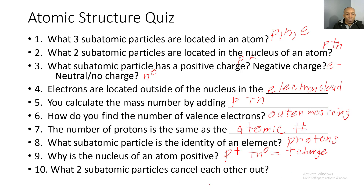Question 10: What two subatomic particles cancel each other out? Answer: protons, which have a positive charge, and electrons, which have a negative charge — positives and negatives cancel each other out. I hope this tutorial was helpful. Please let me know what I can do to assist you, and don't forget to hit the like and subscribe button.